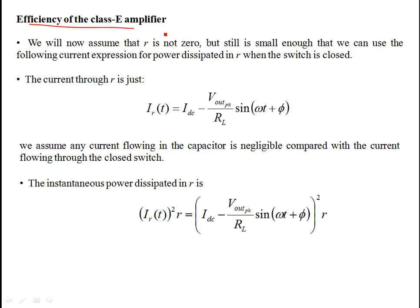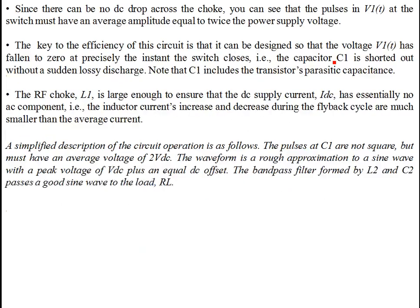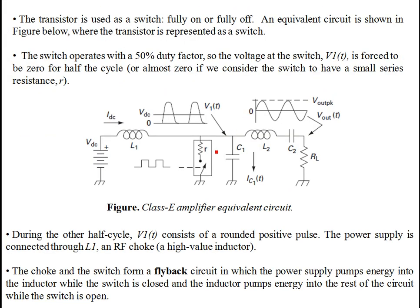For the efficiency of the Class E amplifier, we assume that R is not zero — it is still small but not zero, so it's not a short circuit. It is small enough that we can use the following current expressions through the JFET resistance, and we use this expression for the evolution of the power dissipation in the JFET on-resistance R when the switch is closed. R is much much smaller than the load resistance RL.